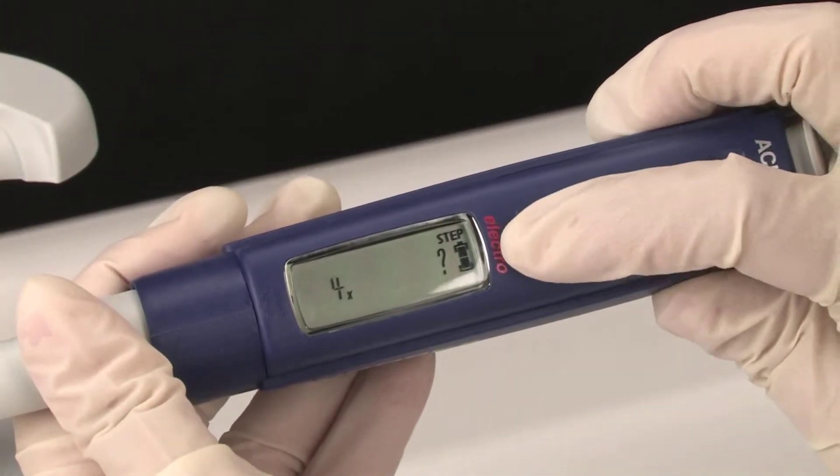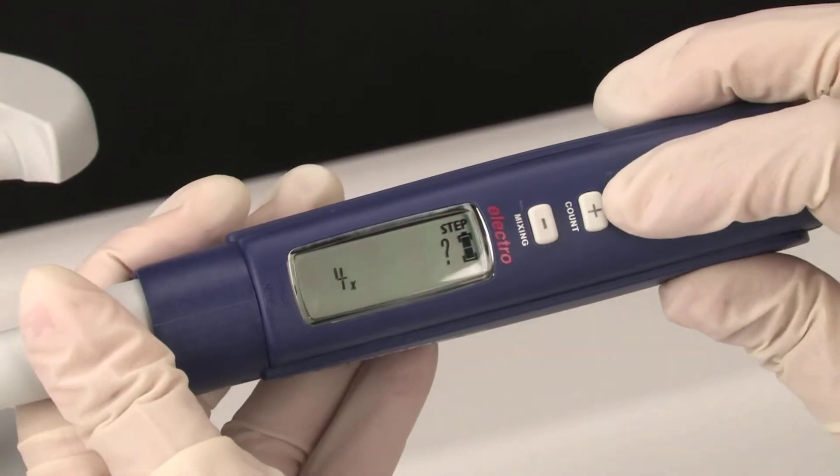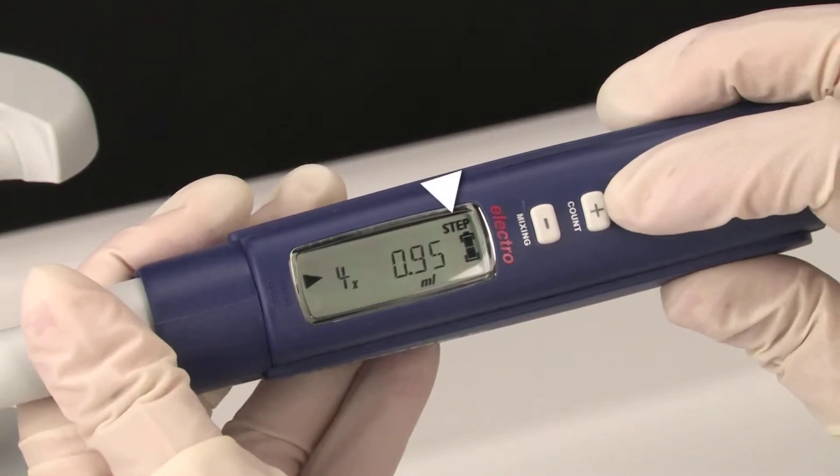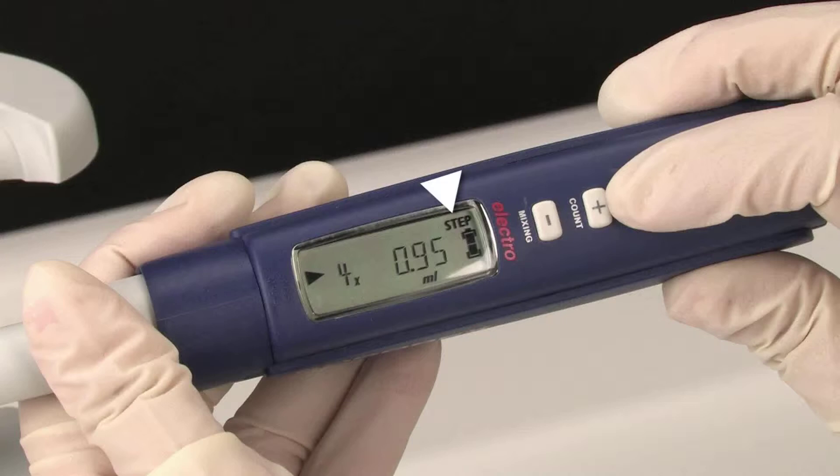The number of aliquots can also be selected using the plus and minus keys. The display now shows step, indicating the pipet is in stepper mode, along with the volume and number of aliquots selected. The triangle pointed toward the top indicates readiness to aspirate.